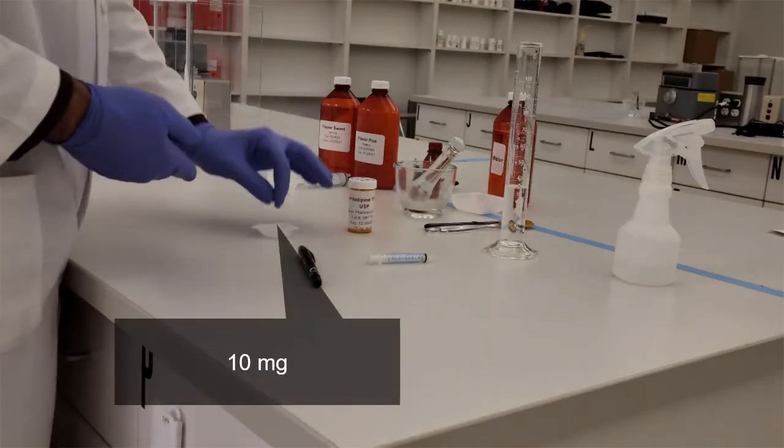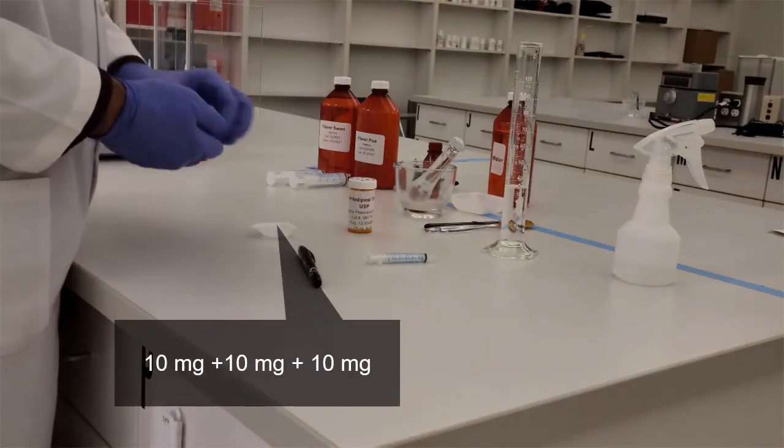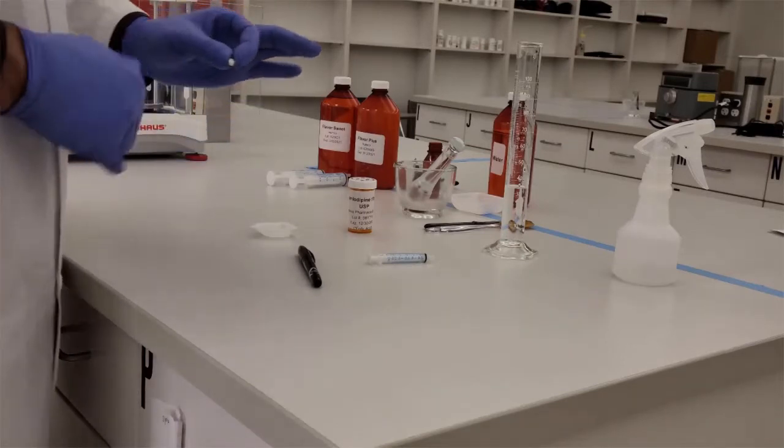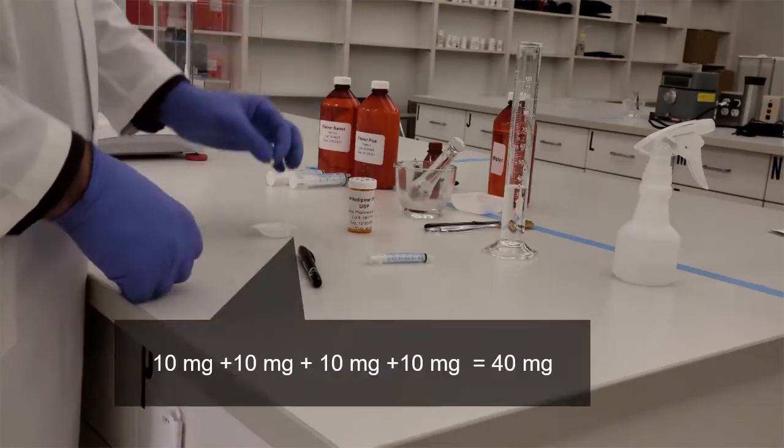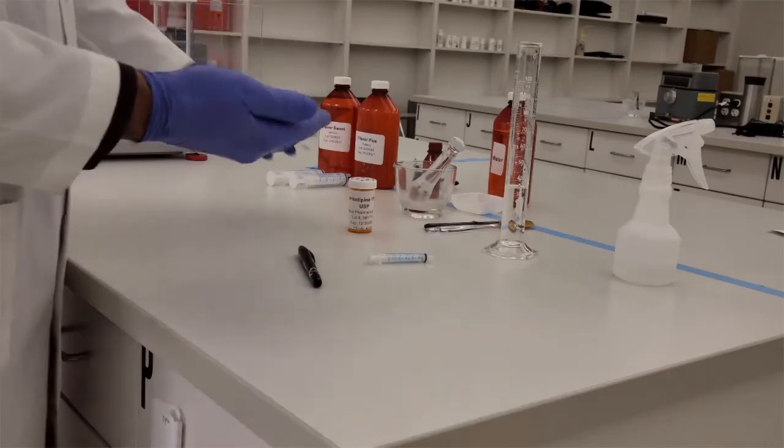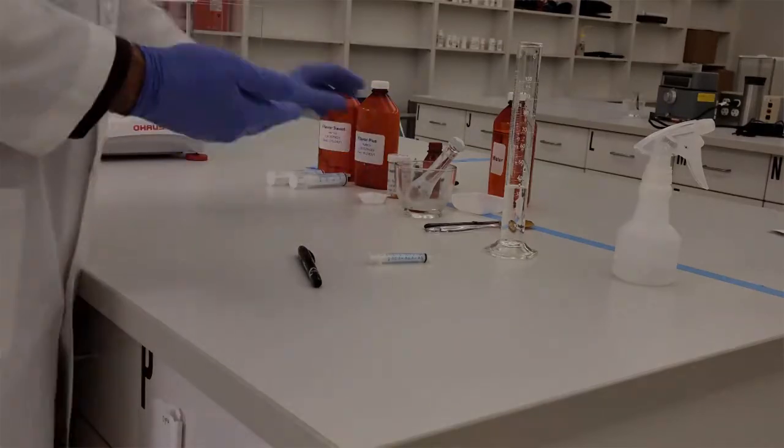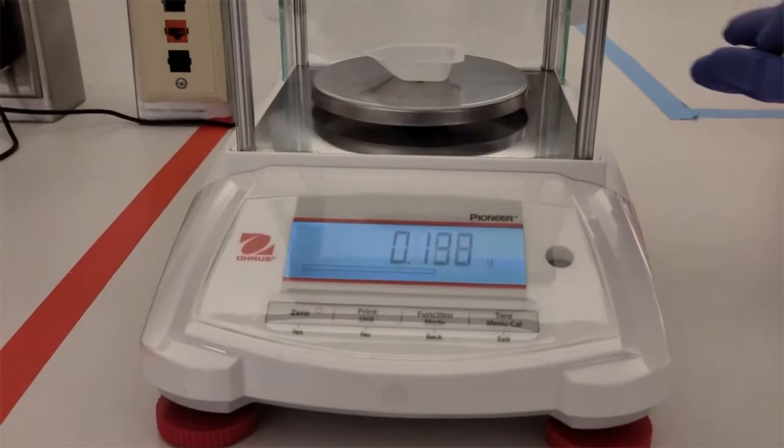So how am I going to get 35 milligrams? Well, if I take one tablet, I've got 10 milligrams. Two tablets, I got 20. Three, I got 30. And now I need 35. So I can split that tablet in half, and I can get that, but that's a little less appropriate. What I'm going to do is actually put four tablets, which contains 40 milligrams of drug, and I'm going to weigh all four of those tablets.